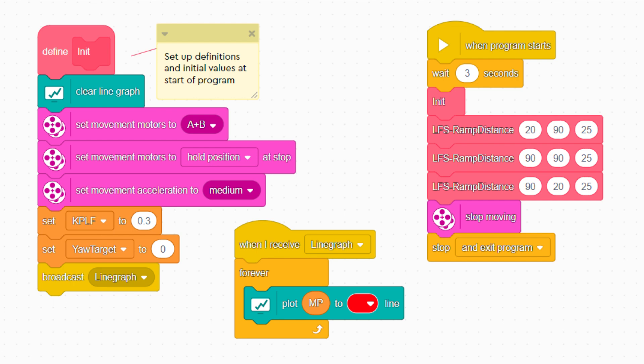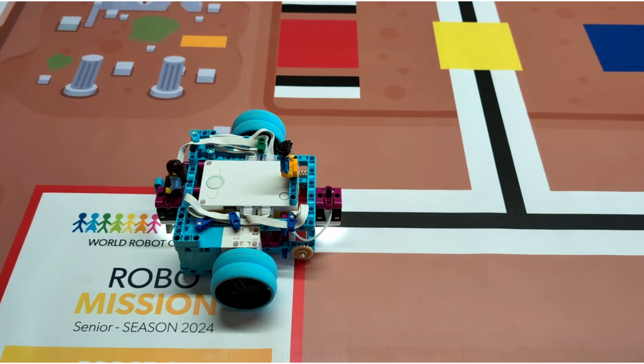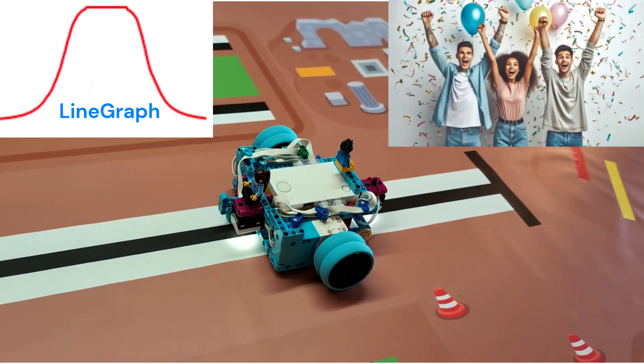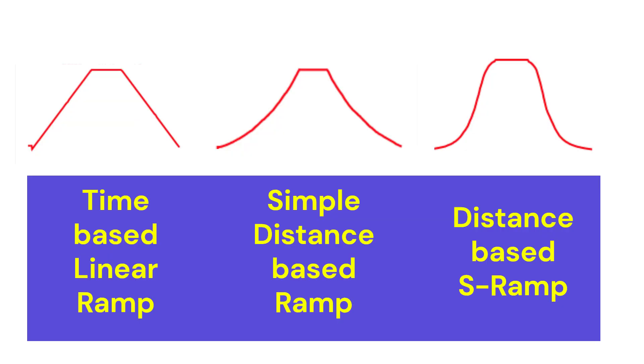Now we need a short program to try the S ramp. We use three of the my blocks to ramp the speed from 20 to 90, hold the speed and then ramp back to 20. Wow! Look at that!